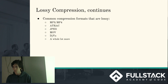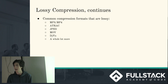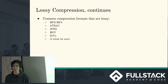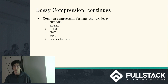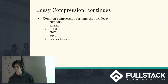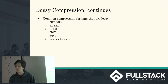Some lossy compression examples: MP3 and MP4 are probably some of the most common. JPEG images is a form of lossy compression — it takes every 8x8 pixel block and combines it into 8 single colors instead of 64. And really, most things end up implementing some form of lossy compression.